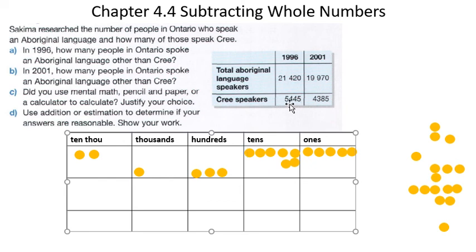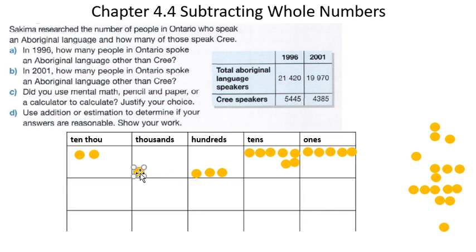Now it's saying take away four one-hundreds, but I don't have four one-hundreds in my hundreds column — I only have three. So I'm going to take this one thousand, move it over here, and change it to ten more hundreds, so I'll have thirteen hundreds in this section right here.